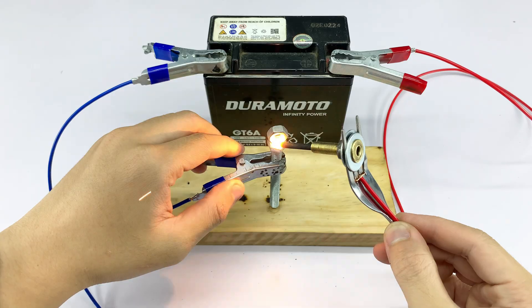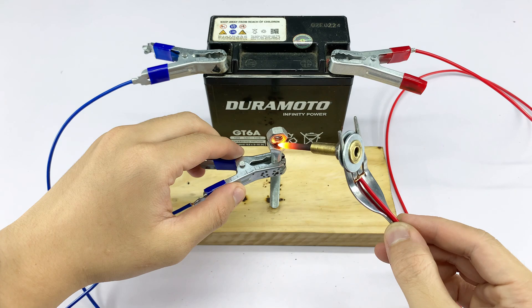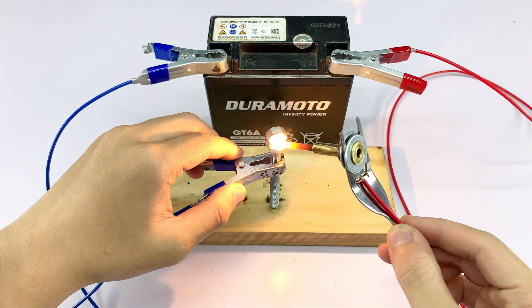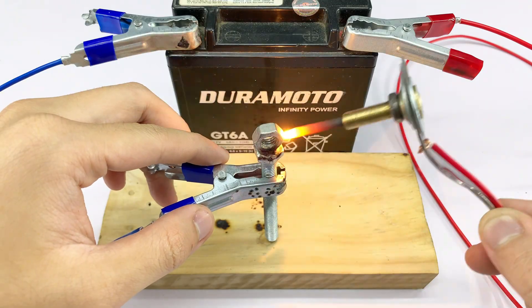You can see it glowing red hot almost instantly. This incredible heat transfer demonstrates that this tool can be used for various applications, like loosening rusted nuts or for metalworking projects requiring localized heating.